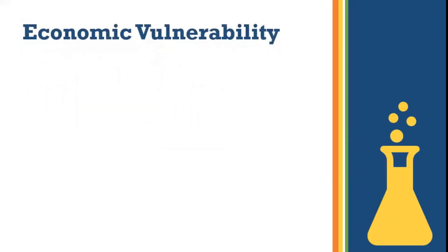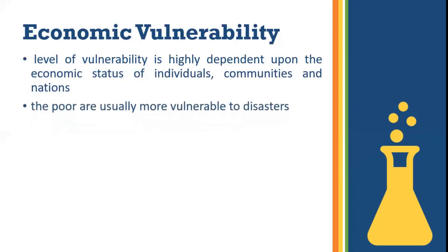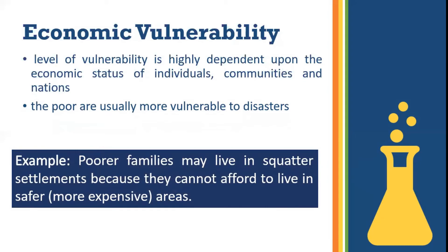The third type of vulnerability is economic vulnerability. The level of vulnerability is highly dependent upon the economic status of individuals, communities, and nations. The poor are usually more vulnerable to disasters because they lack the resources to build sturdy structures and put other engineering measures in place to protect themselves. The same people are the least prepared due to lack of access to education and information. When it comes to economic vulnerability, disasters greatly affect those in the poor sector of society — primarily because they are not well-educated and not well-informed.